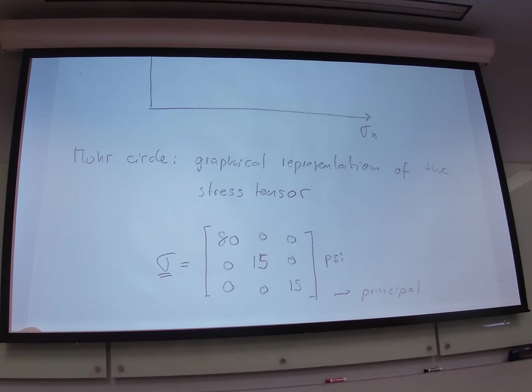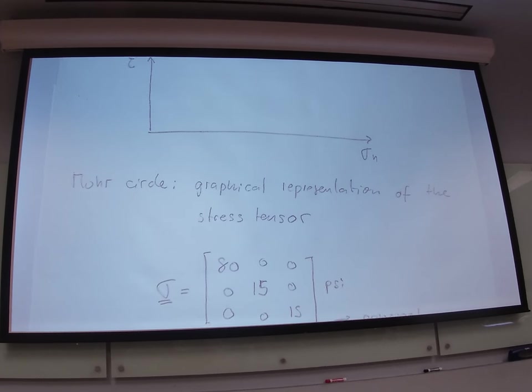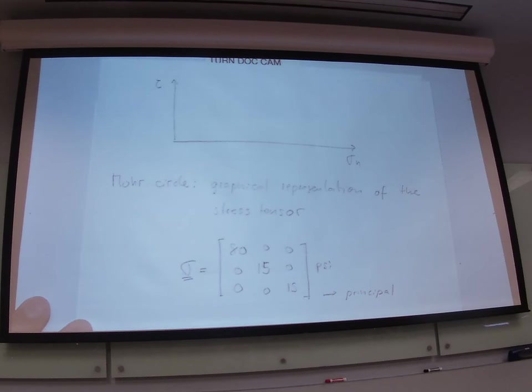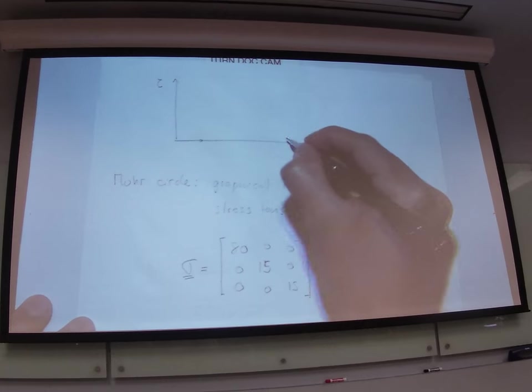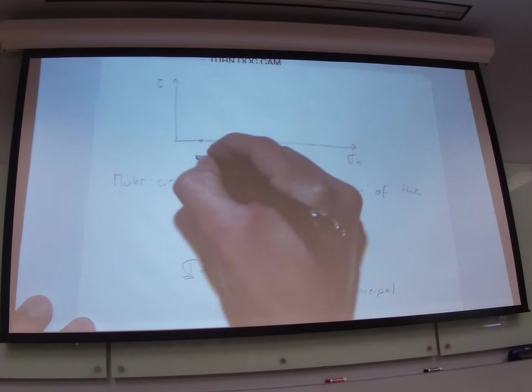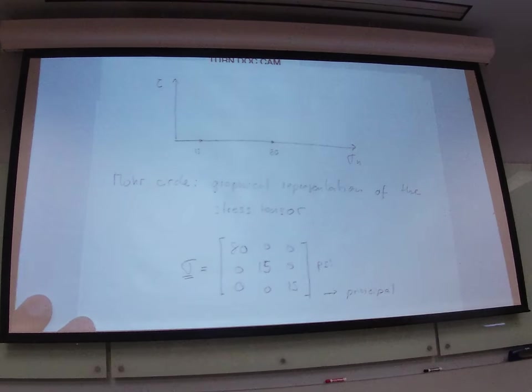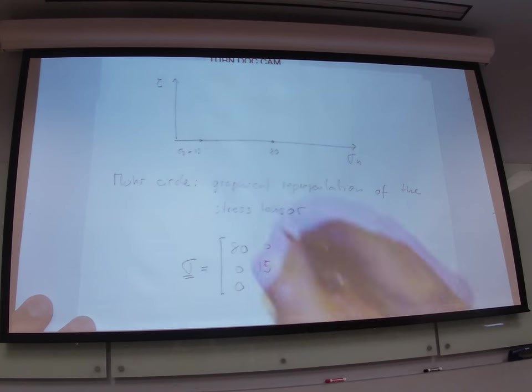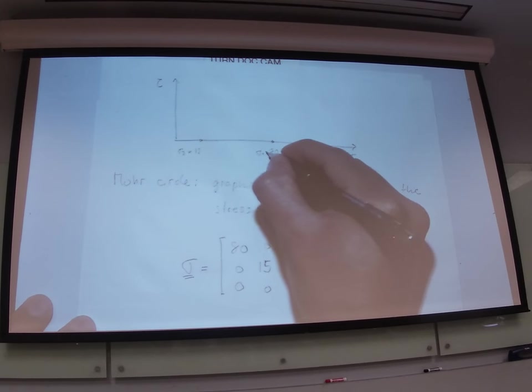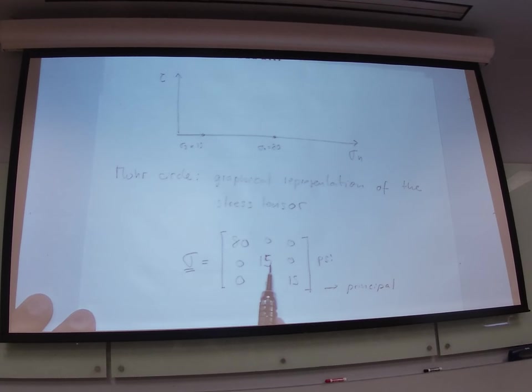So, in the Mohr circle, we draw the principal stresses in the x-axis. So, in this case, for example, I have, let's say here, 15, and here, 80 PSI. This one is sigma 3, the minimum principal stress, and this one is sigma 1. I didn't say here, but sigma 1 is equal to sigma 2, because we have the same pressure in the two directions.